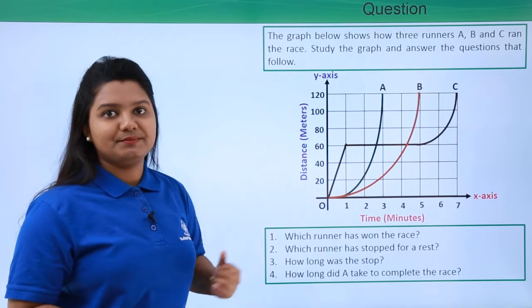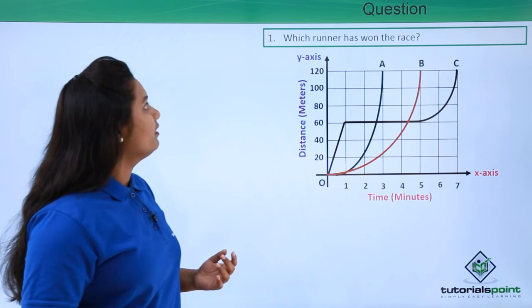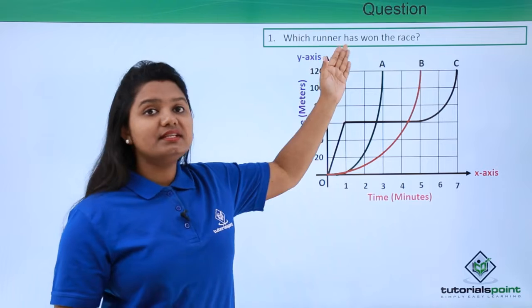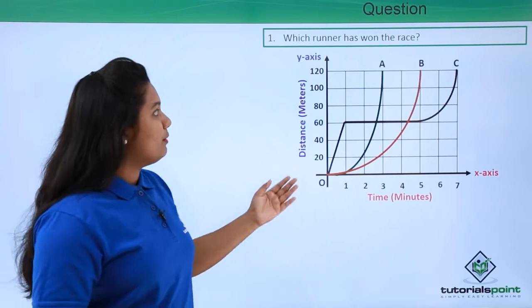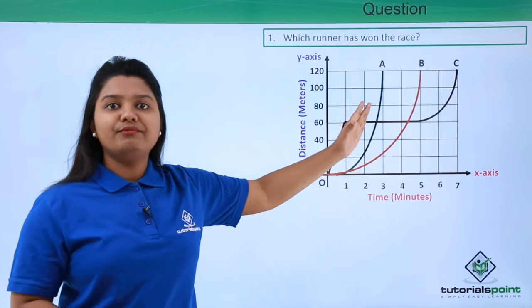Let's start answering the question from question number one. This question says which runner has won the race? Among all these three runners A, B, and C, we need to figure out who was the winner of the race.